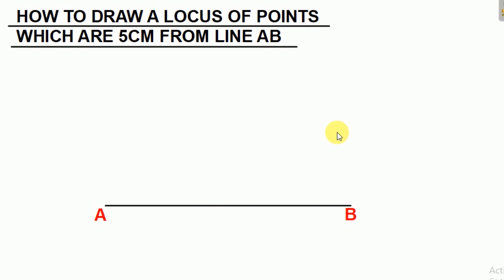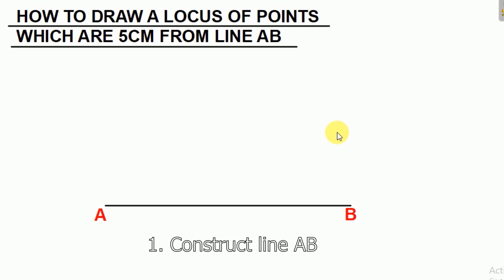Let us now look at how to construct a locus of points which are five centimeters from line AB. So our first step is to construct line AB, and we've already done that.